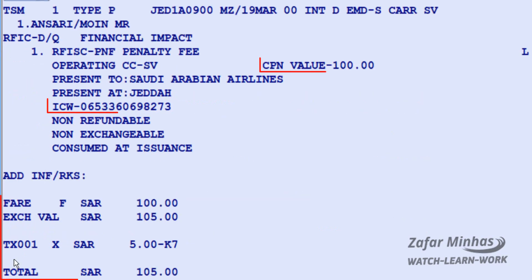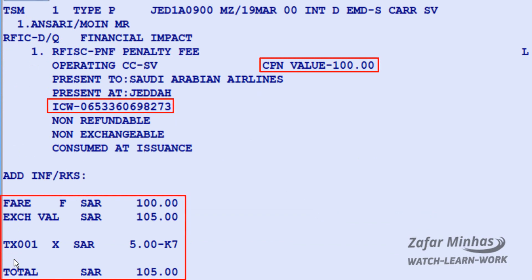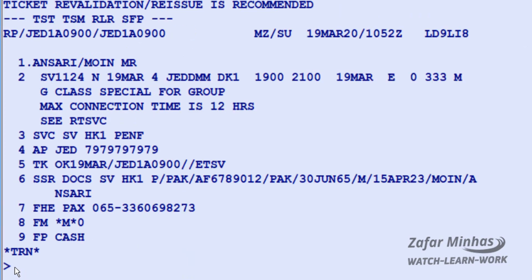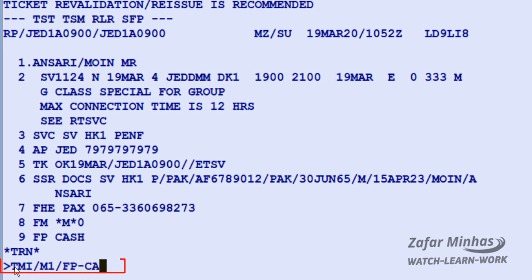All required information is automatically updated in the TSMP record. To issue the penalty fee EMD, you need to update the form of payment. Use TMI — update TSMP record transaction — slash M miscellaneous record indicator plus 1 for TSMP record number 1, slash FP form of payment indicator. The form of payment type here is cash.